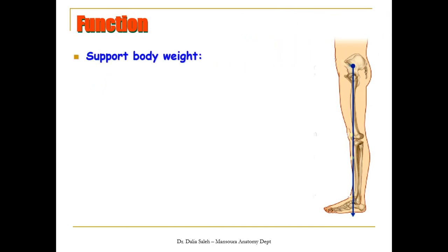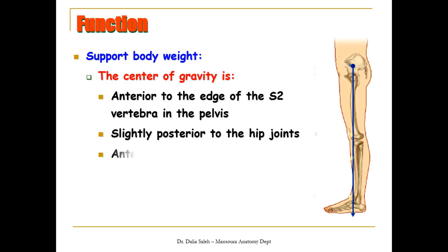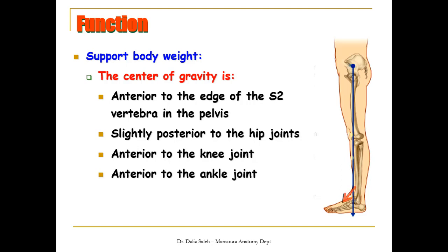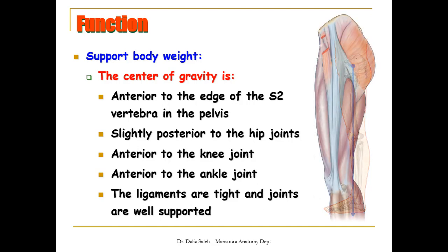The main function of the lower limb is to support the body weight. The center of gravity is anterior to the edge of the second sacral vertebra in the pelvis, then moves slightly posterior to the hip joint, then lies anterior to the knee joint, and then anterior to the ankle joint. When the lower limb is fully extended, all the ligaments are tight and the joints are well supported.